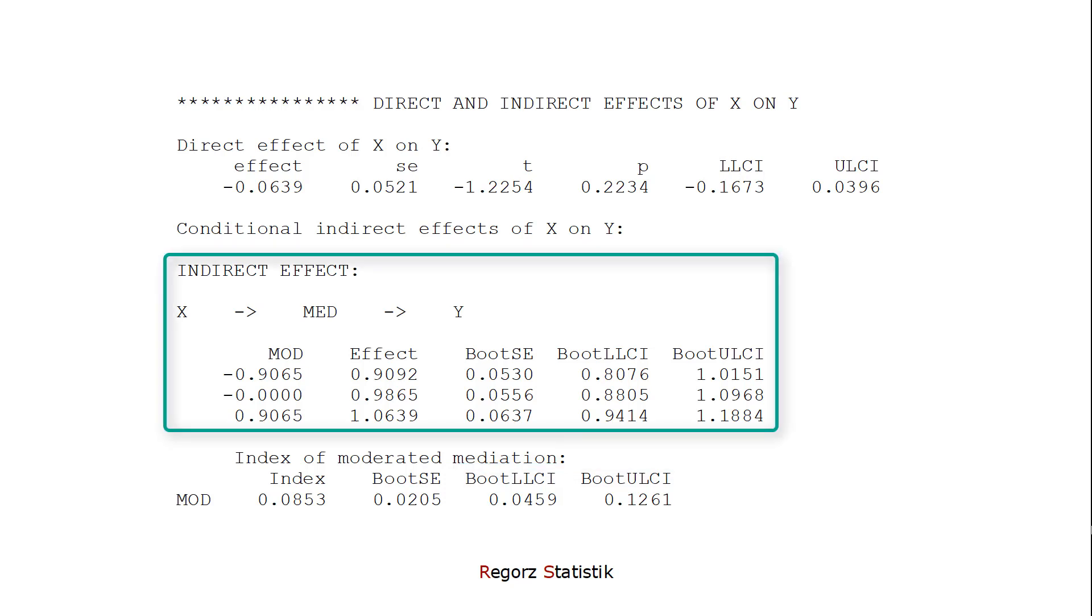If that's the case, the next thing we'll be looking at is the conditional indirect effects, that is, indirect effects for different values of the moderator. And again, we have to look at the bootstrap confidence intervals.